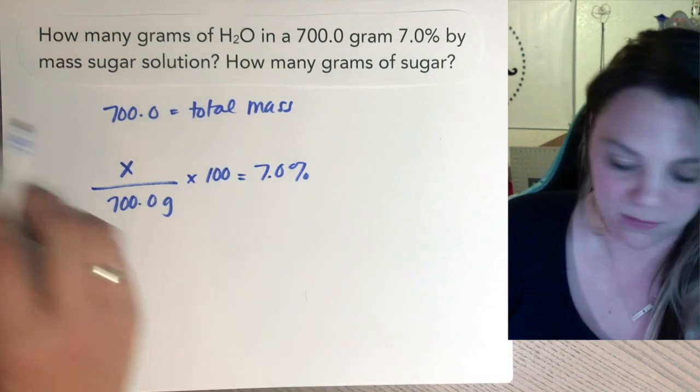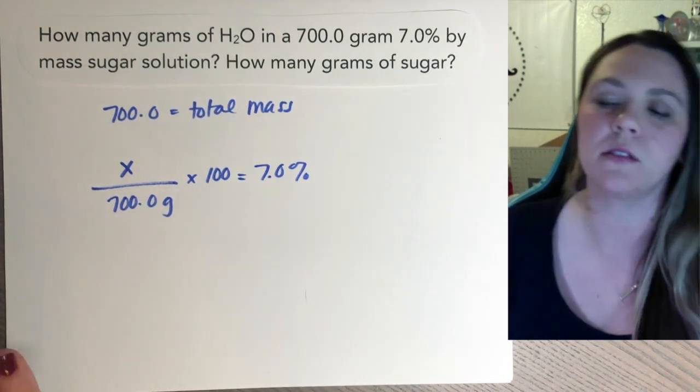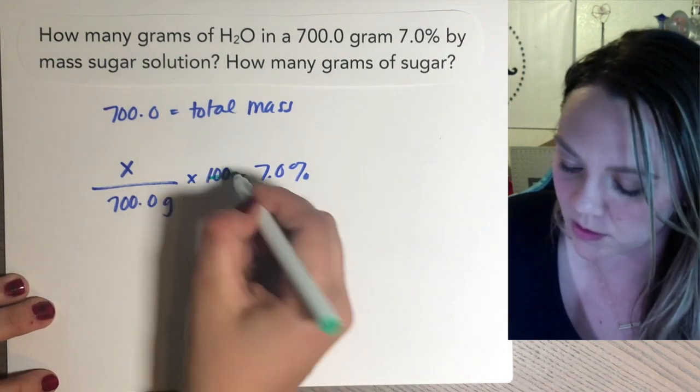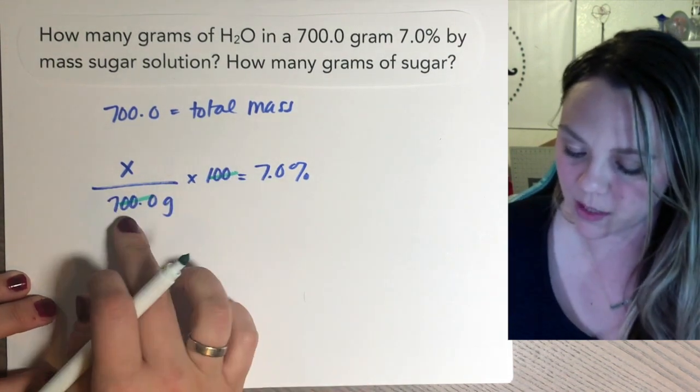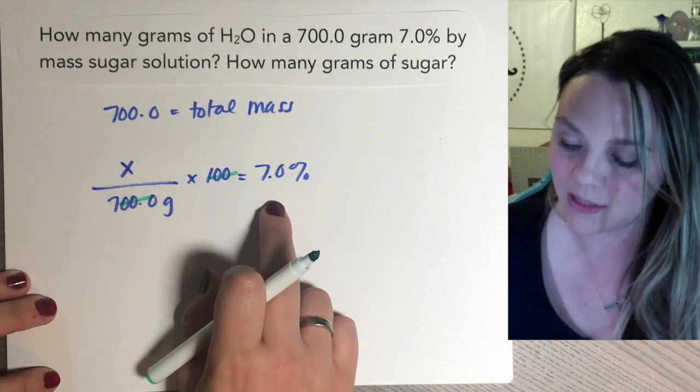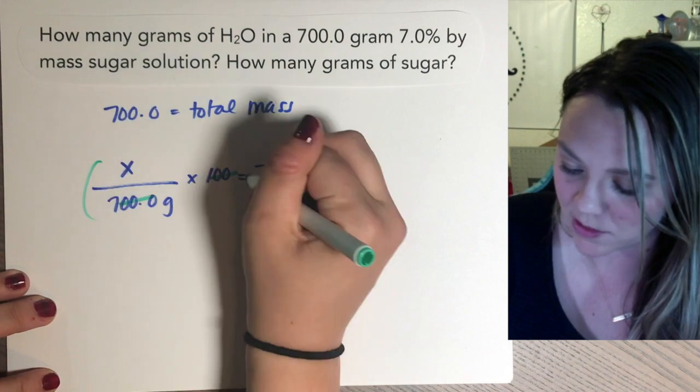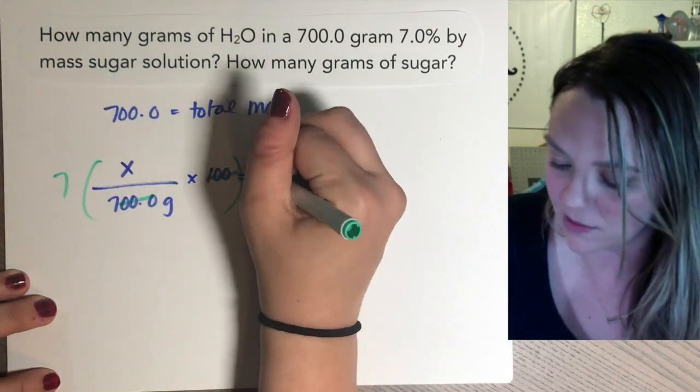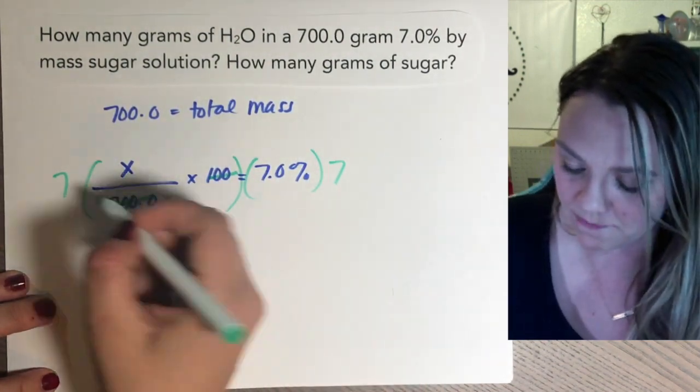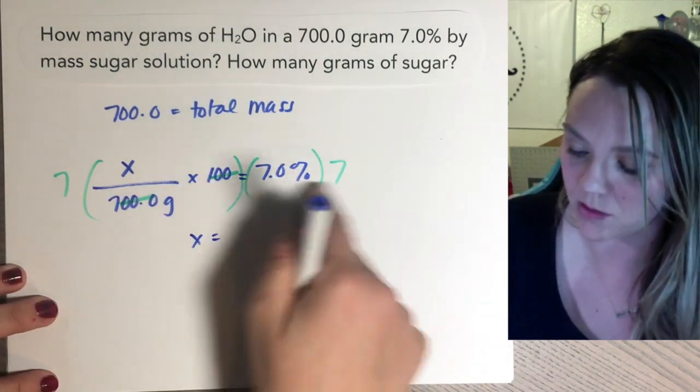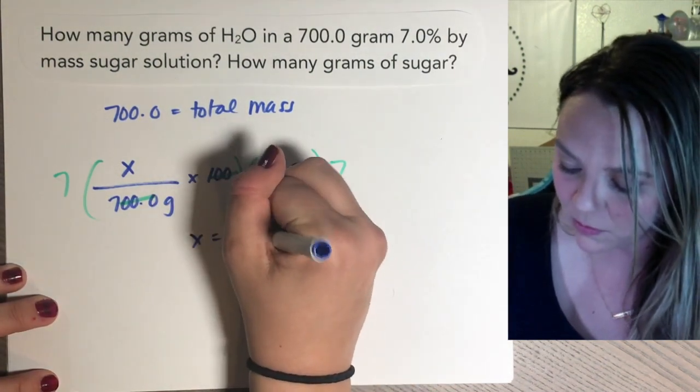So you can either just, you know, if math isn't your thing, you just plug your numbers in your calculator. That's cool. Or you could see that the 700 is going to cancel out. So you get X divided by seven, it's going to equal seven. So you can multiply both sides by seven. So that will cancel and you'll get that X equals seven times seven would be 49.